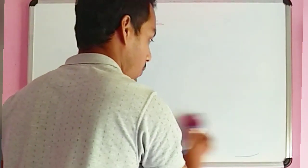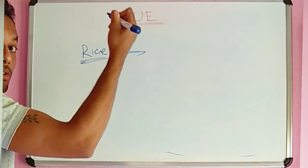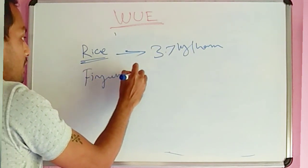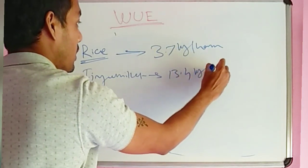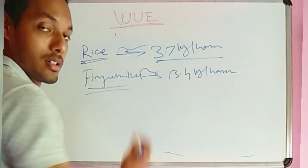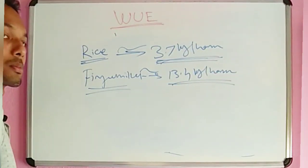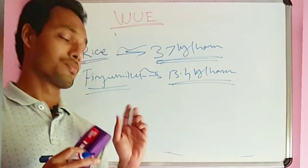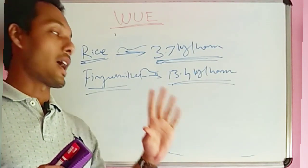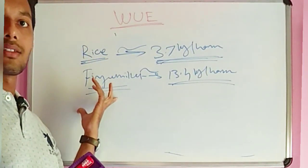In competitive exams, two crops are most important. Rice has the lowest water use efficiency among field crops: 3.7 kg per hectare mm. Finger millet has the highest: 13.4 kg per hectare mm. Remember these two values. So today we learned what water use efficiency is, why we calculate it, how to calculate irrigation amount from centimeters, and what the unit is.